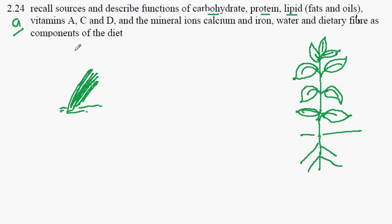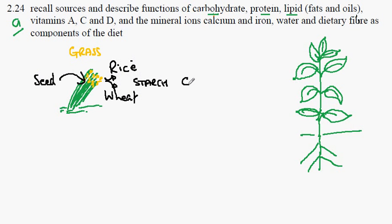There are a number of different types of grass which, having flowered, form seeds. These seeds provide some of the world's best known sources of carbohydrate, which are rice and wheat. These are the seeds of these grasses. These are both forms of starch, and of course starch is a form of carbohydrate.